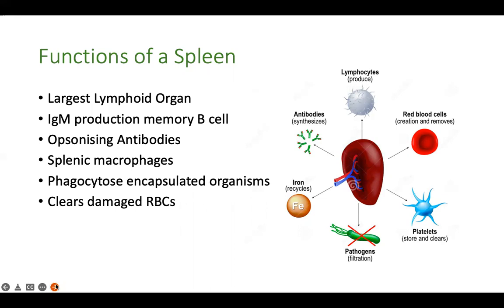Encapsulated organisms have polysaccharide capsules, which are not recognized by T lymphocytes. These capsules are usually negatively charged and are repelled by phagocytes. So what the body does is synthesize opsonizing antibodies, which coat the encapsulated organisms. Once coated with this protein, they are recognized by macrophages and lymphocytes, and phagocytosis occurs.